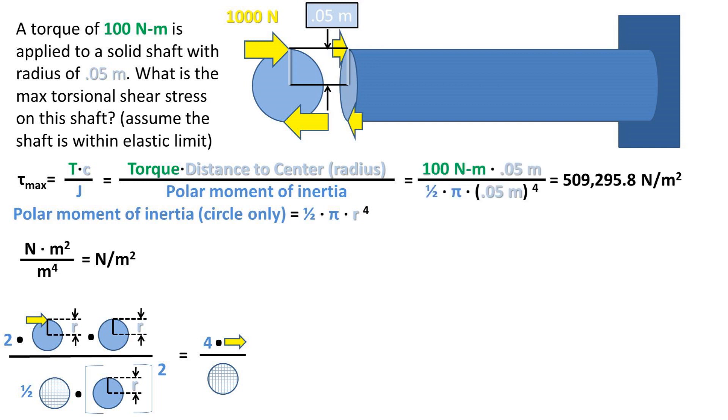Now if we plug our numbers into the formula and press enter on our calculator, we get about 509,000 newtons per meter squared, or pascals.